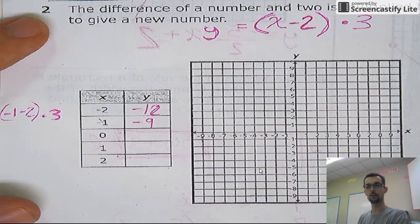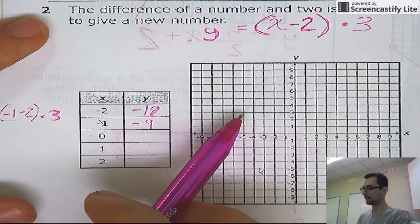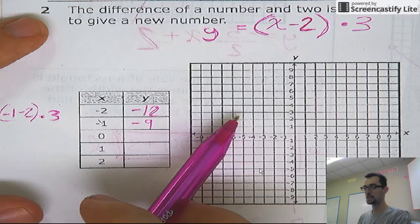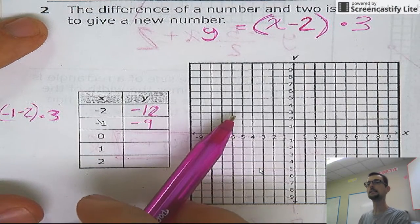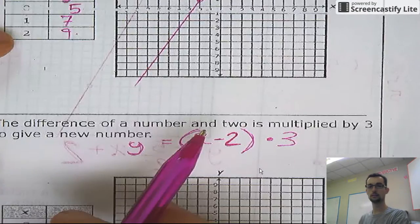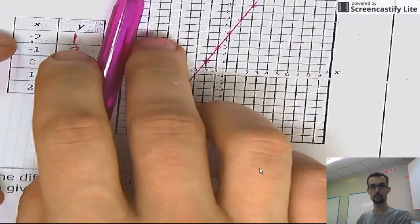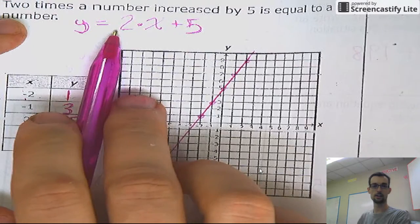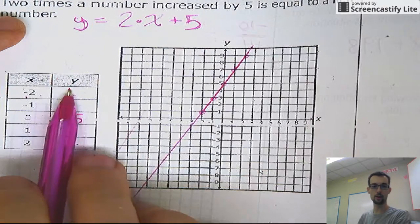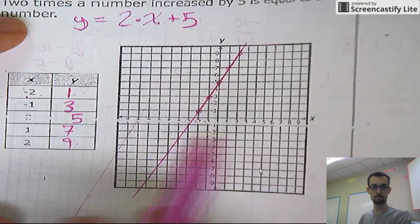Here's a hint, guys. Remember what we were talking about before, where the number that's being multiplied by X is your difference. Remember that up here? Up here. Oh, there it is. Two X. So your pattern is going up by two, right?